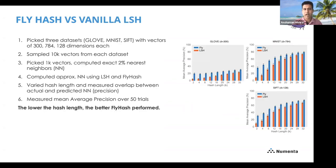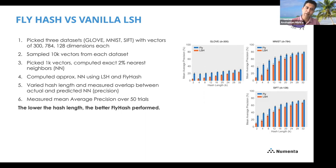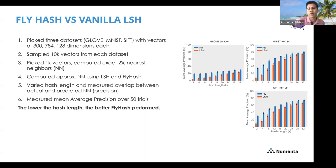Fly hash versus vanilla LSH: they recreated the fly's nose circuitry, created the fly hash algorithm, and picked three datasets — GloVe, MNIST, and SIFT. They sampled 10,000 vectors from each dataset, did 50 runs picking 1,000 vectors each time, computed exact nearest neighbors (top 2%), then computed approximate nearest neighbors using standard LSH random projections and fly hash. They varied the hash length and measured overlap between actual and predicted nearest neighbors over 50 trials, computing mean precision. They found that the lower the hash length, the better fly hash performed relative to standard LSH.